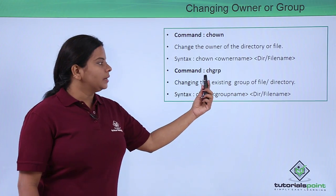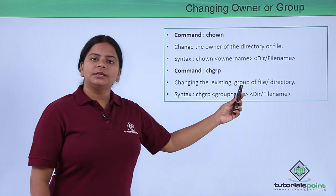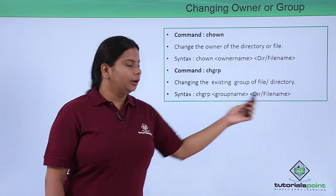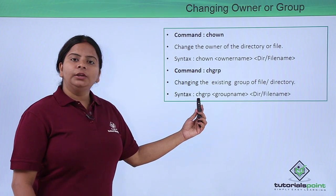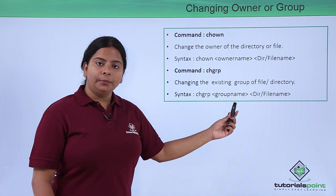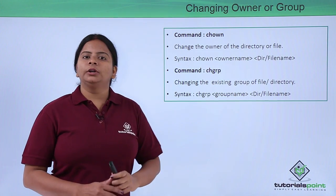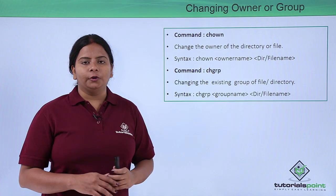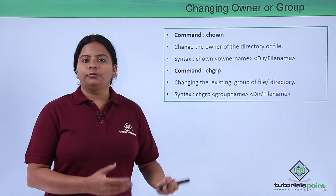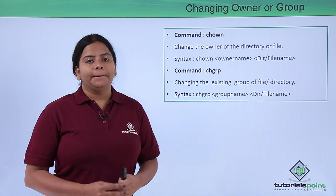Similarly, we can also change the group using the command chgrp. This chgrp command is used to change the existing group to a new group for a file or directory. The syntax is: chgrp followed by the new group name and then the file or directory. This group can be the owner group or a supplementary group.